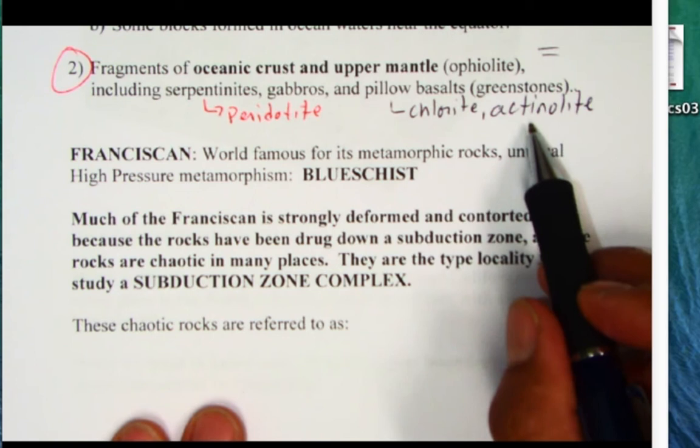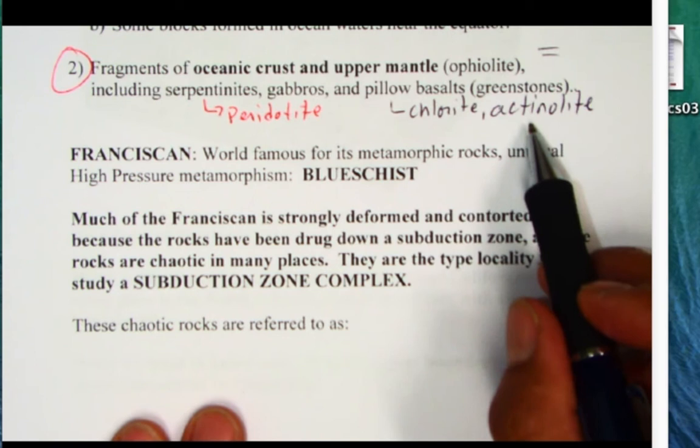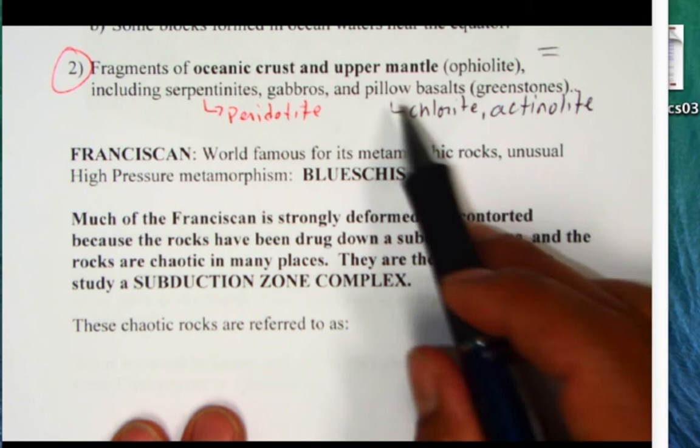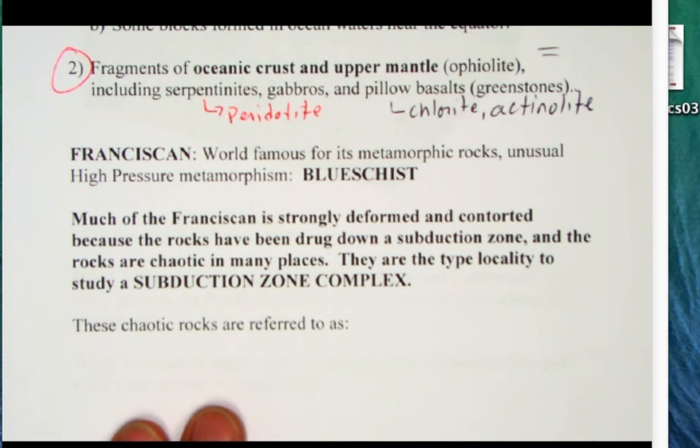Both of these minerals have a green color to them so it makes the rock, the basalt, look overall green. The pillow basalts form when the basalt magma erupts from these mid-oceanic ridges and pours into seawater.